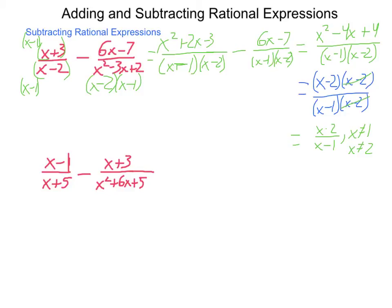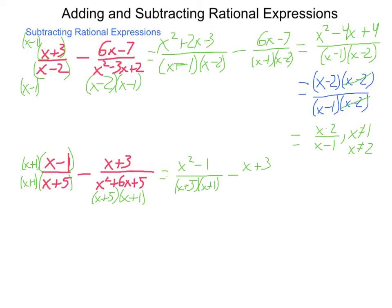Let's take a look at the second subtraction example. We have x minus 1 over x plus 5, subtracting x plus 3 over x squared plus 6x plus 5. Factoring that second denominator gives x plus 5 times x plus 1. Our first fraction has the x plus 5 and needs the x plus 1 portion, so we multiply it by x plus 1 over x plus 1. That gives us x squared minus 1 divided by x plus 5 times x plus 1, from which we subtract x plus 3, also over x plus 5 times x plus 1.